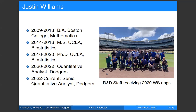My background: I went to Boston College for undergrad with a pure math major, then did both an MS and PhD in biostatistics at UCLA. I directly joined the Dodgers right out of grad school, first as a quantitative analyst and now as a senior quantitative analyst. I joined at a very good time — we won the World Series in 2020 right after I joined, and I was able to receive a ring. This is some of the R&D staffers at that time with our World Series rings.